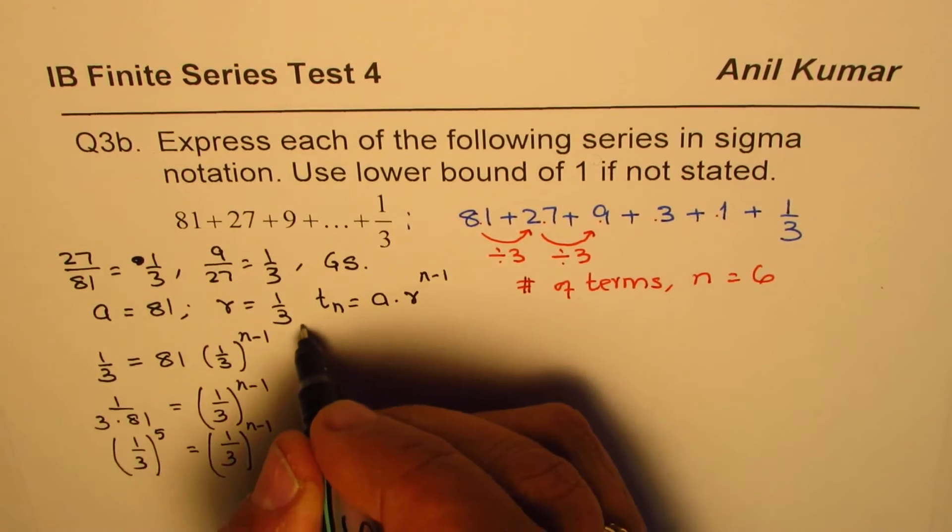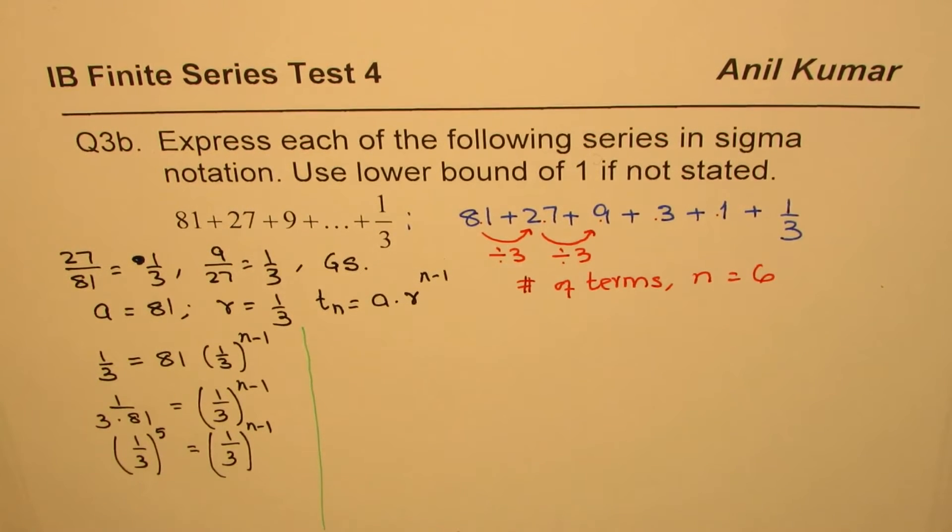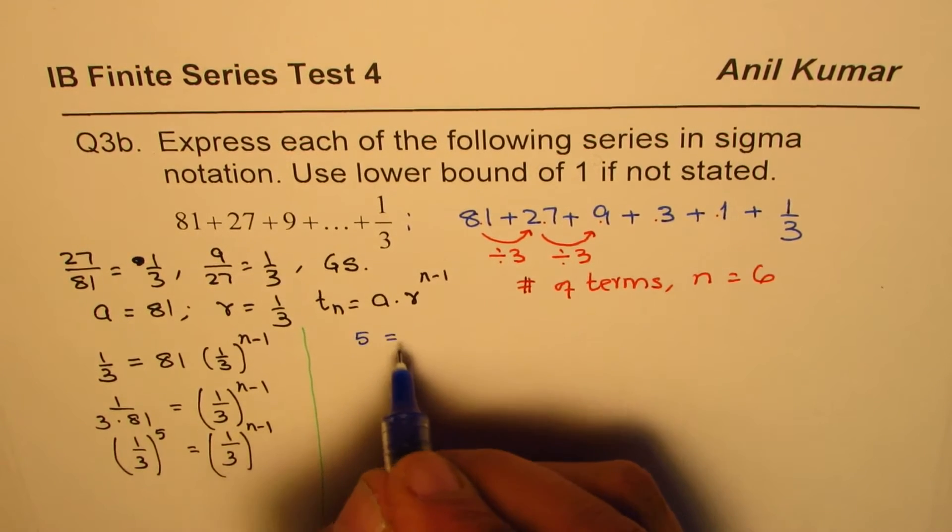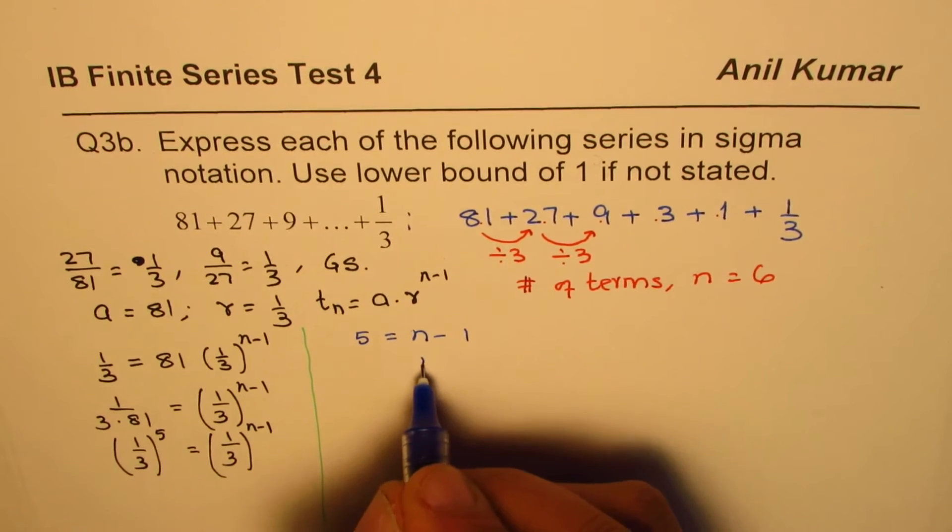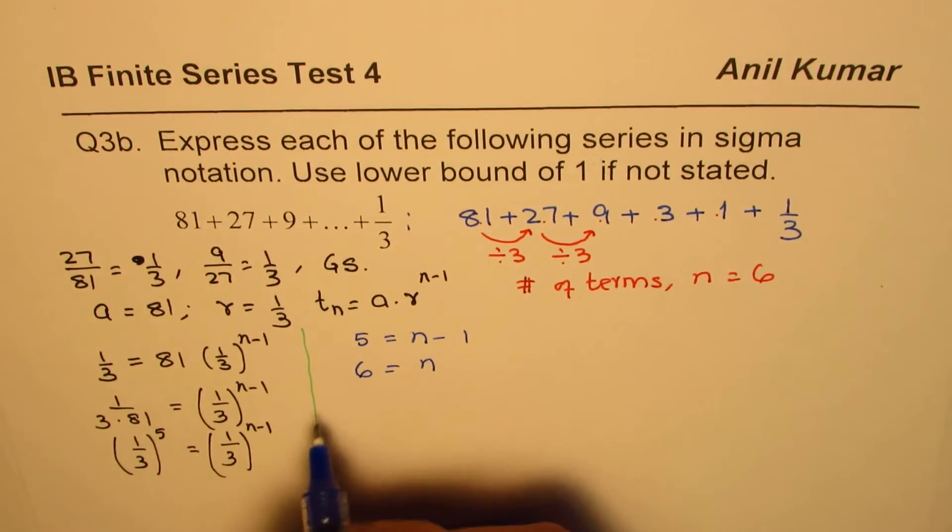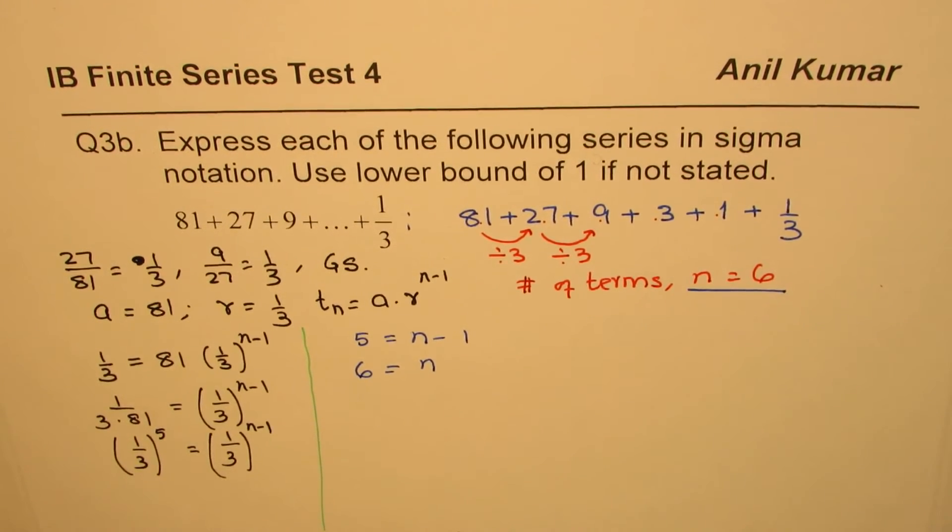Now from here, since we have the same base, exponents should be equal. So 5 should be equal to n minus 1 or n is equals to 6. So we get the same answer, n equals to 6.